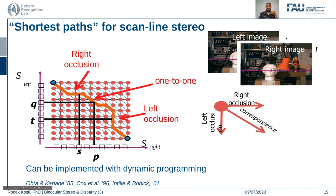The key insight is that the authors were able to reformulate this whole problem using dynamic programming, finding the shortest path along the stereo scan line. This provides a more efficient way of finding correspondences with scanline stereo.